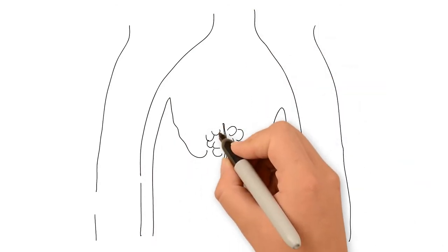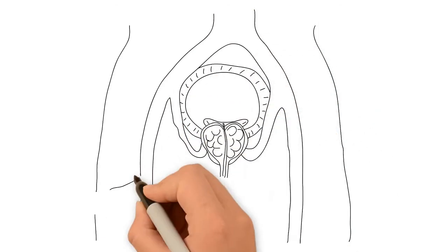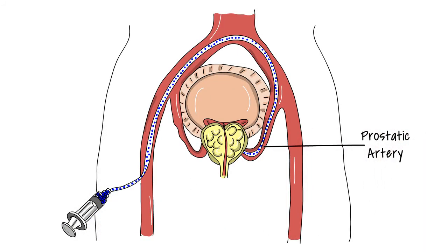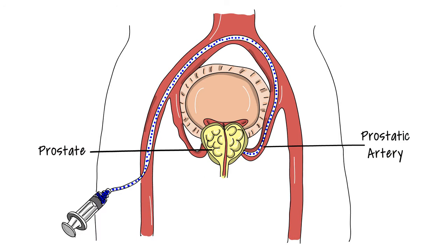Interventional radiology can treat symptoms of an enlarged prostate. By injecting tiny microspheres into the prostate artery, the blood flow to the prostate can be cut off, causing it to shrink.